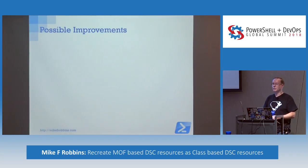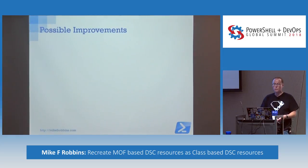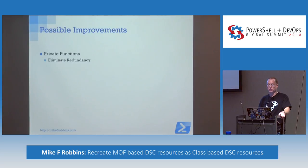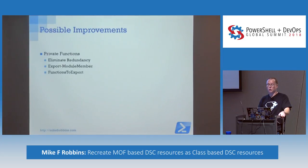The required functions for MOF-based resources: Get-TargetResource must return a hash table. Set-TargetResource only runs if Test-TargetResource fails, and you have to design it to configure the non-compliant items and return null. Test-TargetResource determines if the items are compliant and needs to return a boolean. And possible improvements — you can use private functions to reduce the redundancy of your code. You need to either use Export-ModuleMember to only export the target resource functions, or use functions to export in the module manifest.